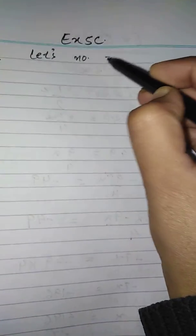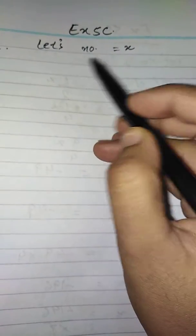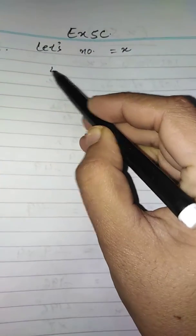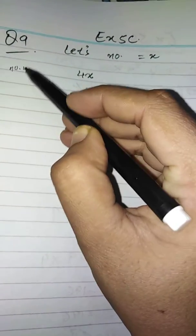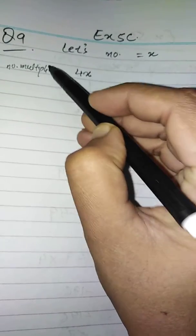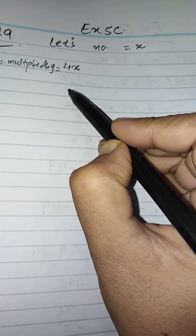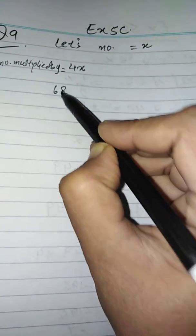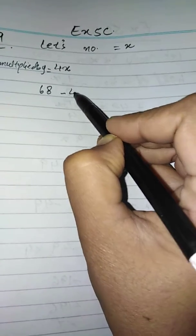Let the number be x. They said that when a number is multiplied by four, it will become 4x. Before subtracting from 68 means that you have to subtract this number from 68, so it becomes 68 minus 4x. They said that the result obtained is the same as three times...